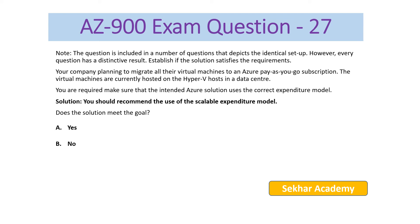AZ-900 Exam Question number 27. The scenario is the same as question 26, but the solution is different. Here the proposed solution recommends the scalable expenditure model. The scalable expenditure model will also not support the pay-as-you-go model. So the right answer is B, no.